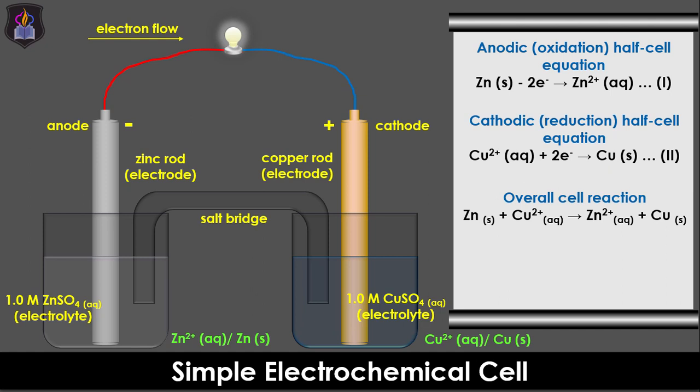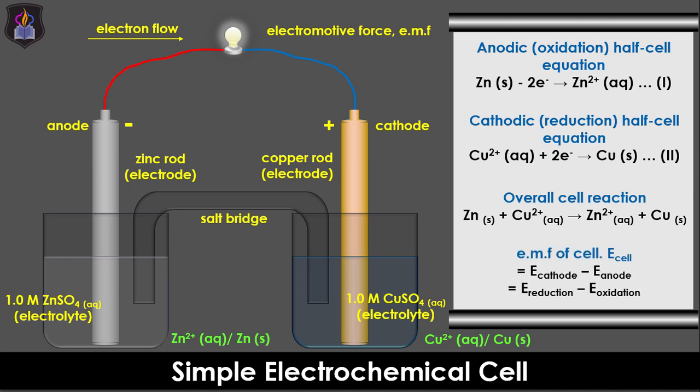It is important to note that the difference in the electro potentials of the two half cells is the potential difference of the overall cell, or the electromotive force (EMF) of the cell. The EMF of a cell is the driving force behind the cell which enables it to do work. It is calculated using the formula: E cathode minus E anode, or E reduction minus E oxidation.